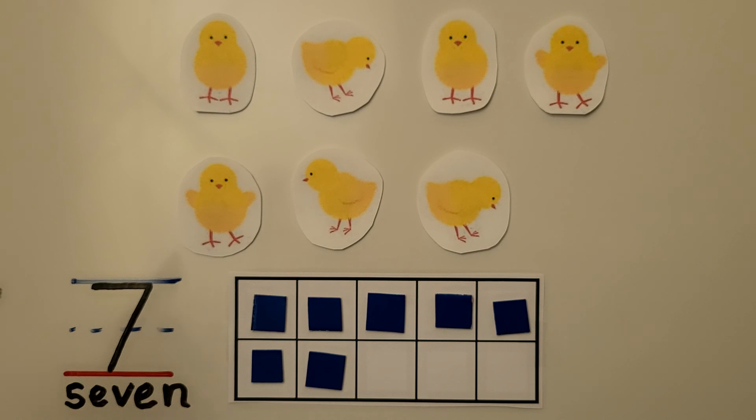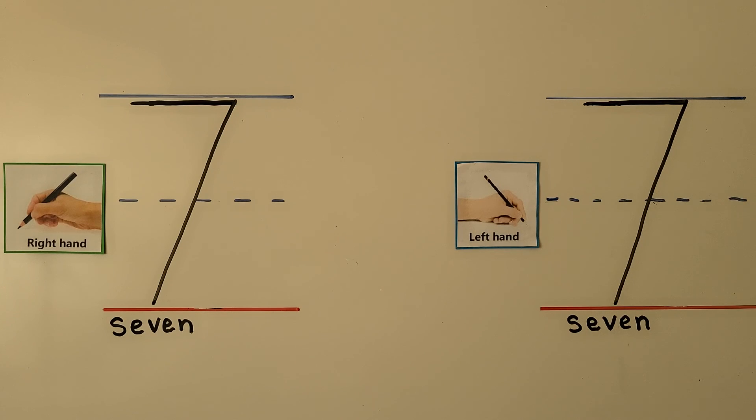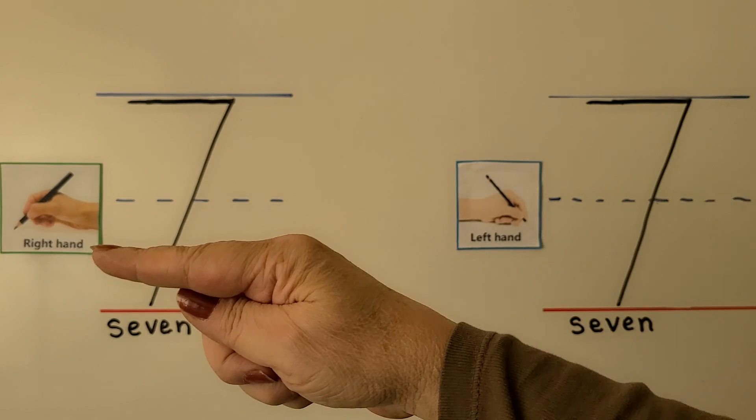Here we have the number 7 and here we have the word 7. We can trace the number 7 with our right hand. That's this hand.